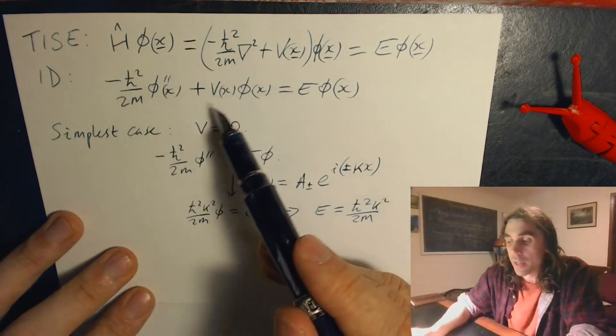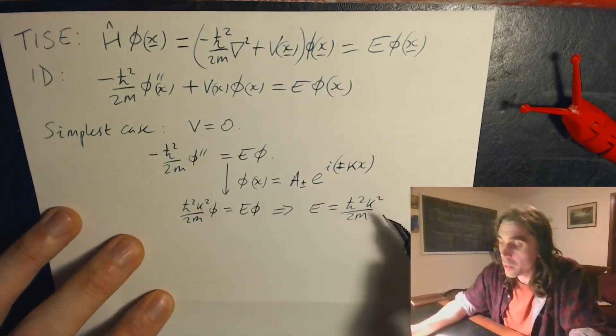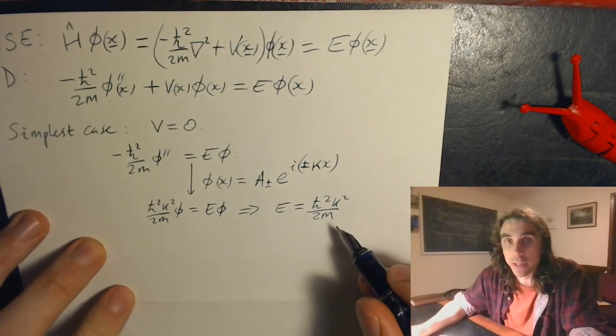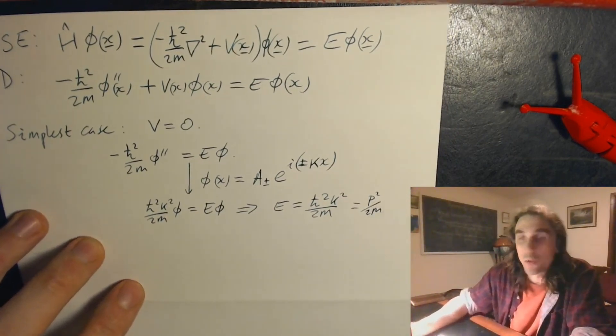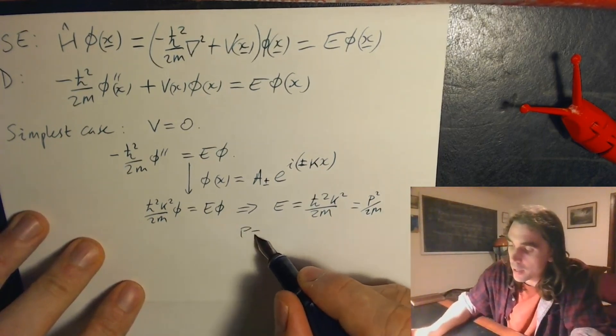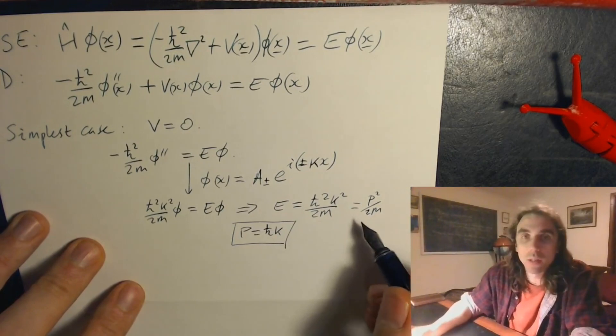We've set the potential equal to zero, so the energy should be purely kinetic. A kinetic energy we'd usually expect to be able to write p squared over 2m. So this is true, provided that p equals h bar k. You can see from here.